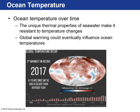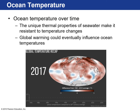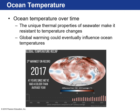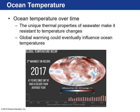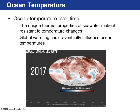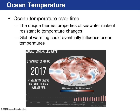Ocean temperature changes over time. Since the Industrial Revolution, we've seen our oceans warm up because we're putting a lot of CO2 in the atmosphere as a result of burning fossil fuels. That traps more heat in the atmosphere and heats up the ocean water. Our oceans do a really good job of regulating temperature because they have high heat capacity — ocean water resists drastic temperature changes — but despite that, global warming is still influencing ocean temperatures.